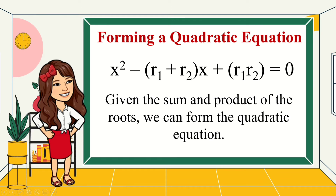Given the sum and product of the roots, we can also form the quadratic equation. This time, given the roots, we will find the sum and product, then form a quadratic equation. Previously, given the quadratic equation, we found the roots. This time, given the roots, we find the quadratic equation — it's a reverse process. Using this equation: x squared minus the sum of the roots times x plus the product of the roots equals 0.